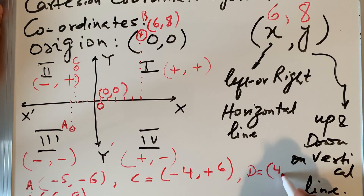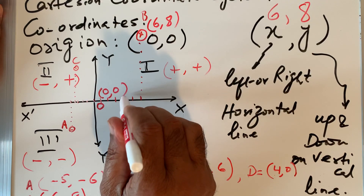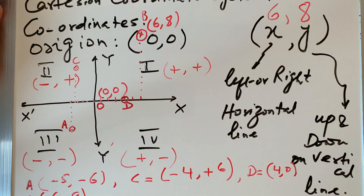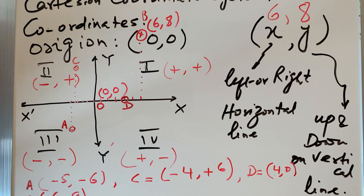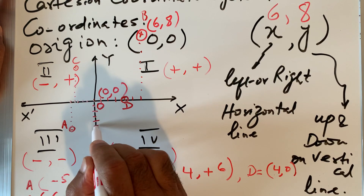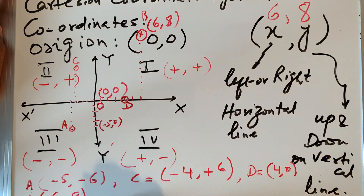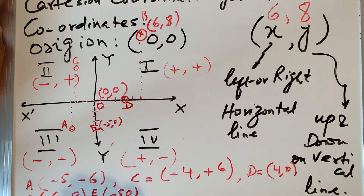Consider point D at (4, 0): I measure 4 on the x-axis horizontally, but there is nothing on y. So this point lies on the x-axis itself. When a point is on the x-axis, we cannot say it is in the first, second, third, or fourth quadrant — we say it lies on the x-axis. Similarly, point E at (-5, 0) also lies on the x-axis.